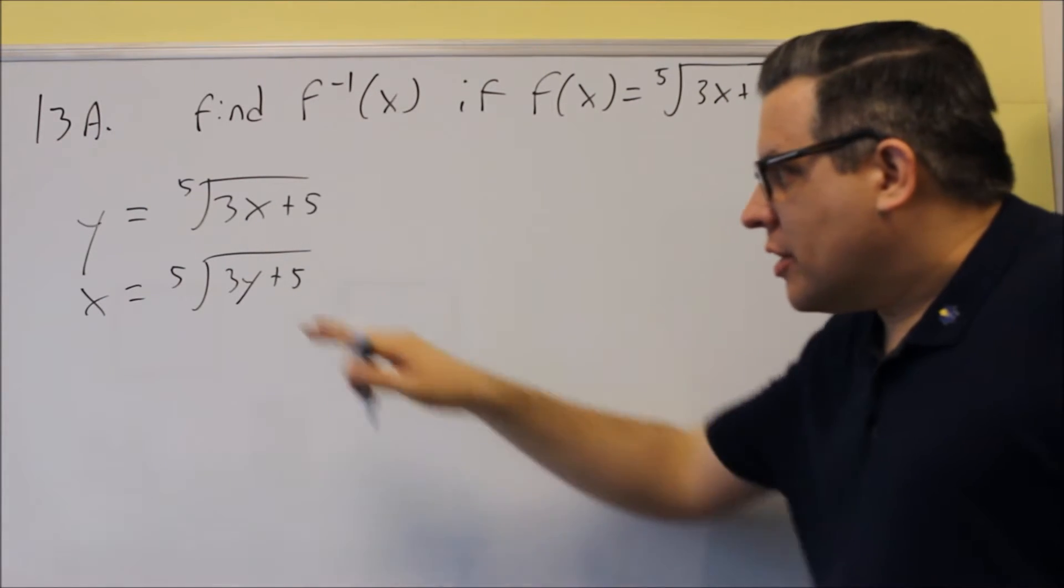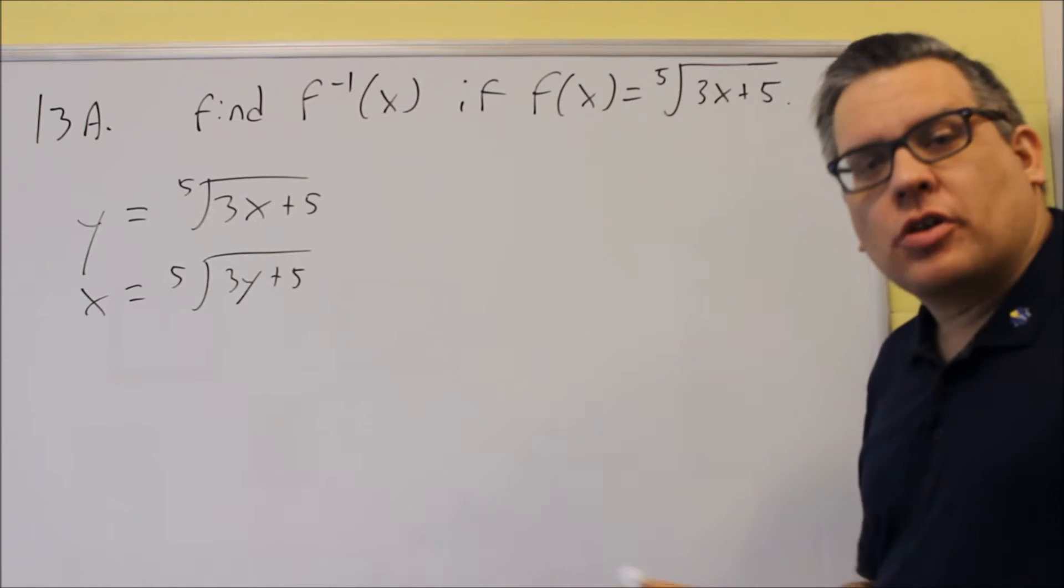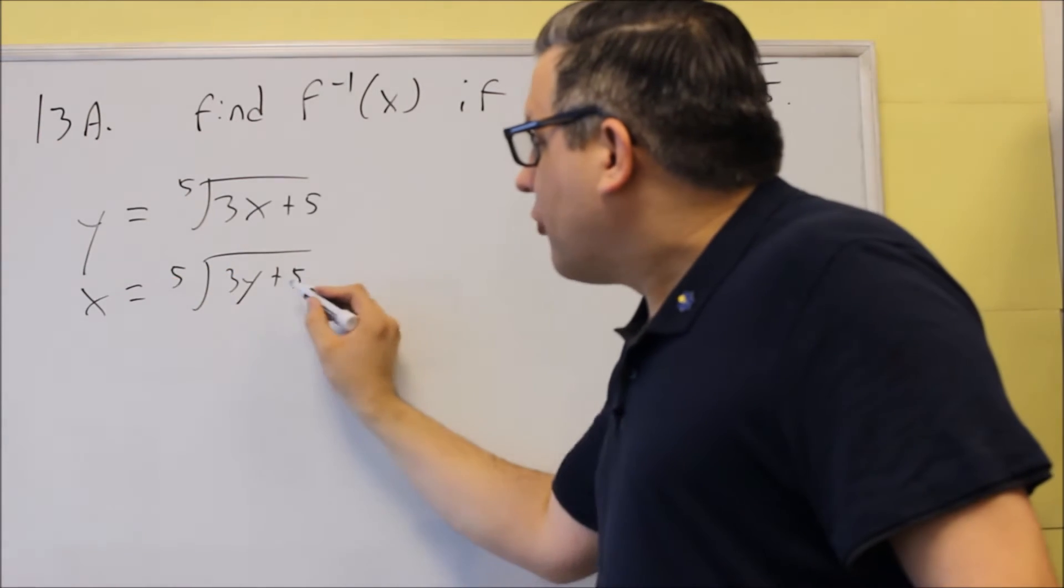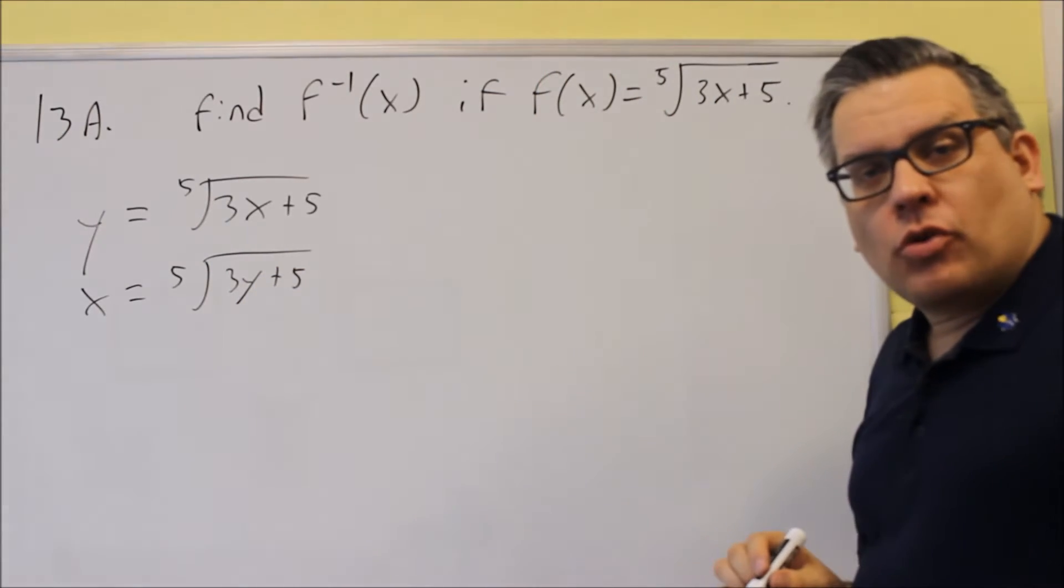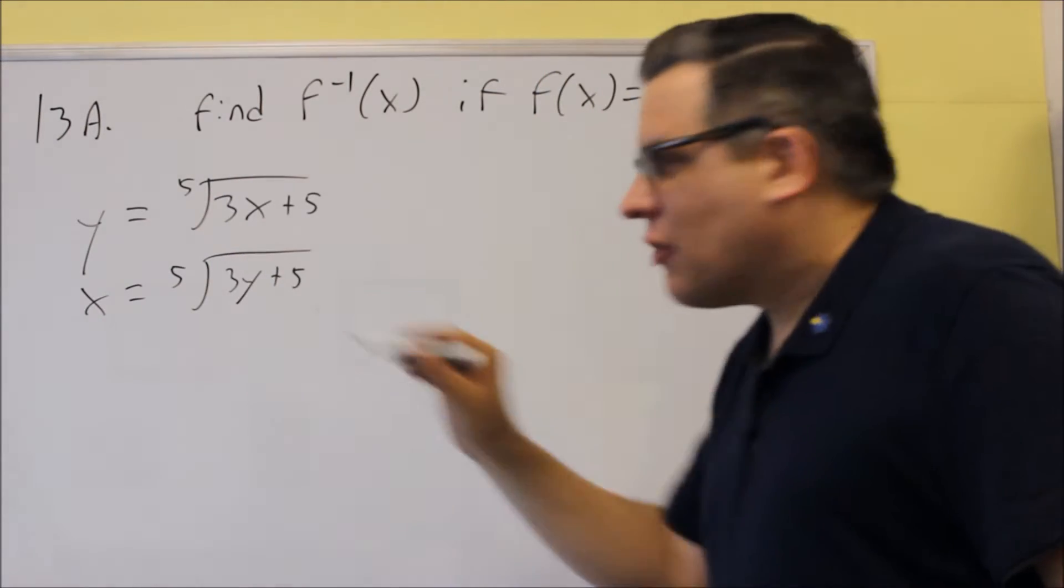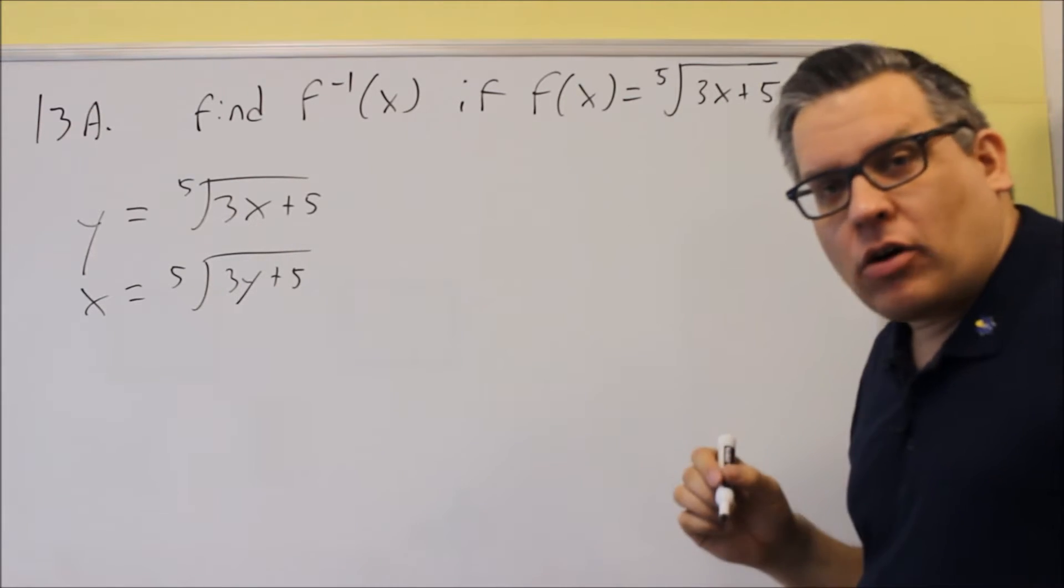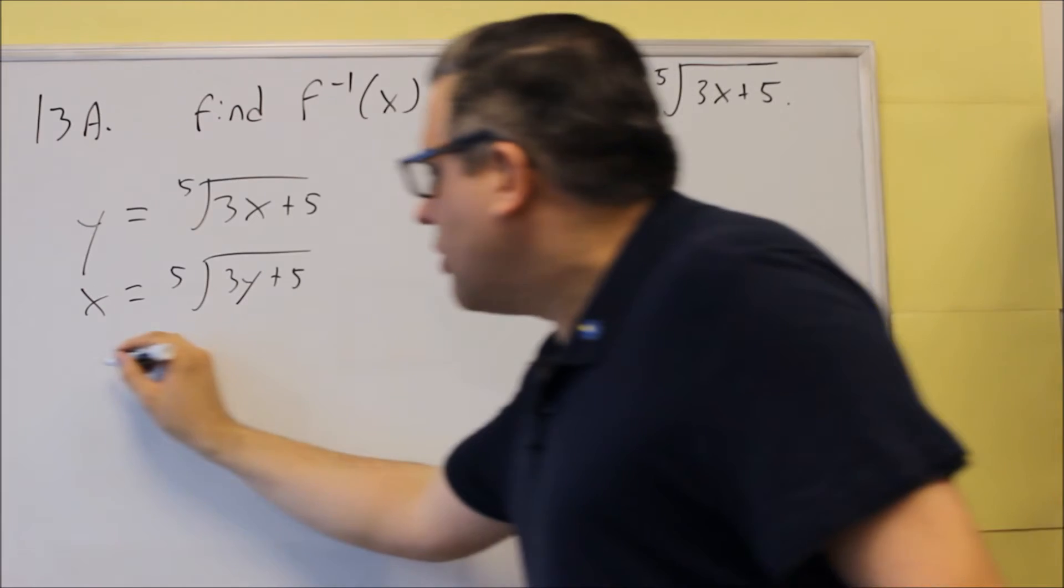After that, what you want to do is solve for y. So that would be your step three is solving for y. In order to solve for y, we want to get rid of the root that's there. And since that's a fifth root, we want to raise both sides to the fifth power. That way it will cancel out the root that's there.